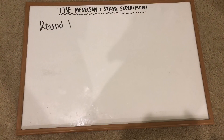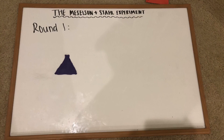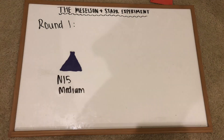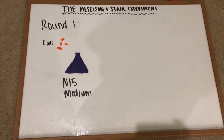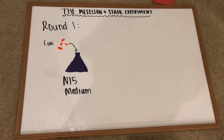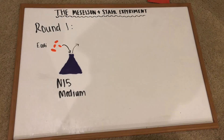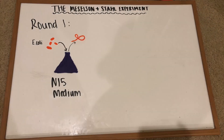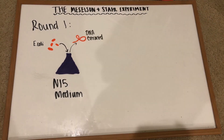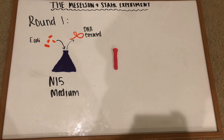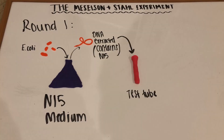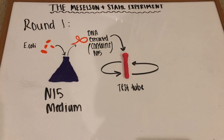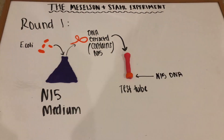First, they took E. coli grown in an N-15 medium and took a sample of their DNA. Then, they placed the DNA into a test tube to spin in a centrifuge. As predicted, the results showed all the DNA settling at the bottom of the test tube, 100% of it containing the N-15 component.